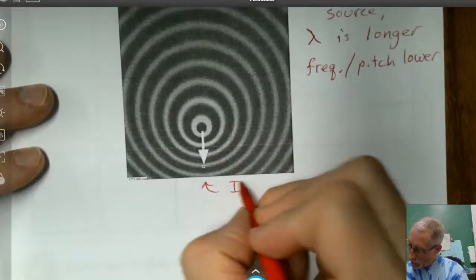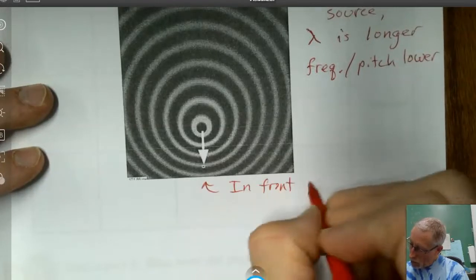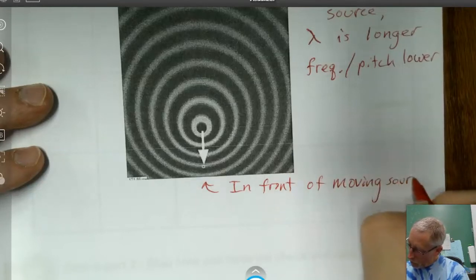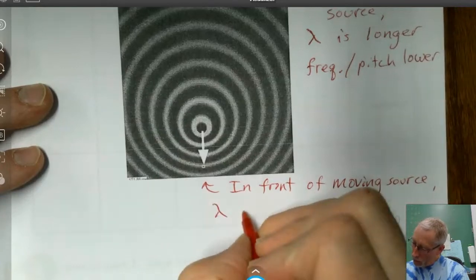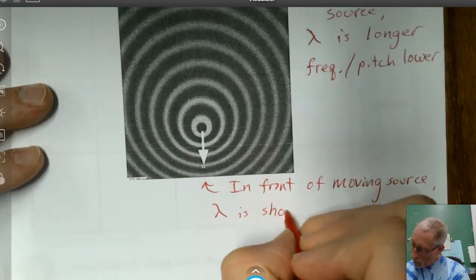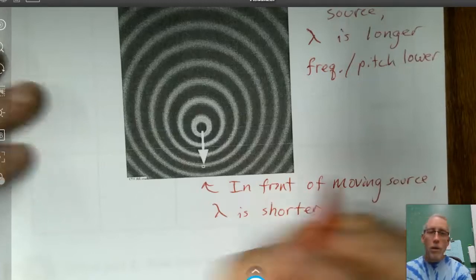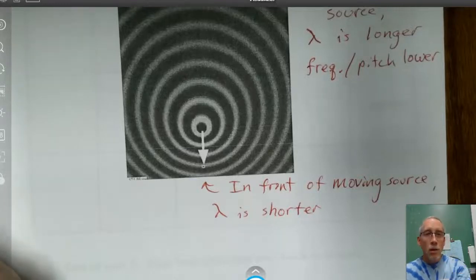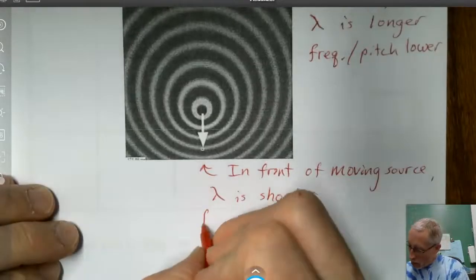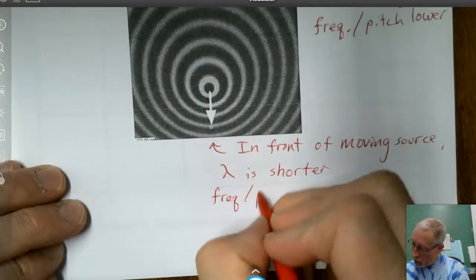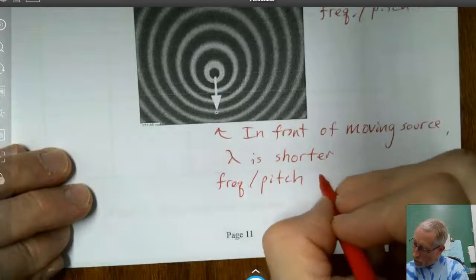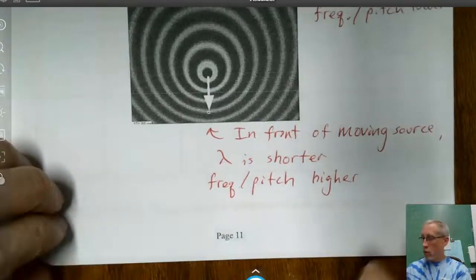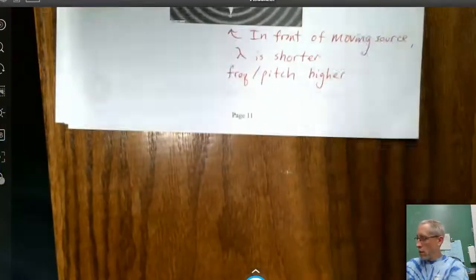And then here in the front, in front of the moving source, the wavelength is shorter. It's almost like right after it emits one of those waves, it's moving towards it and ends up a little less space between each of those crests. So in this case, the frequency and pitch are higher.